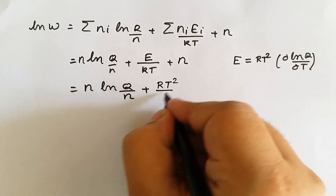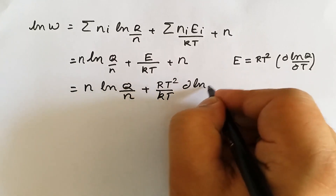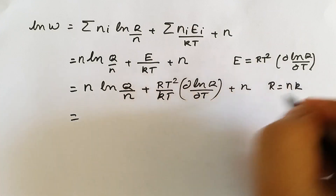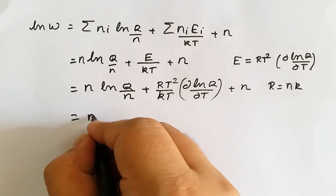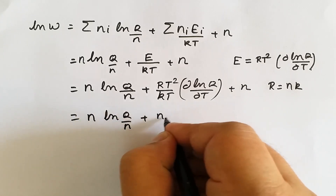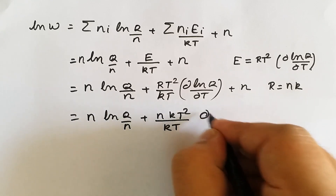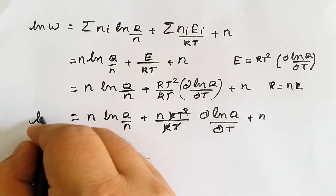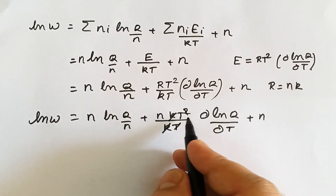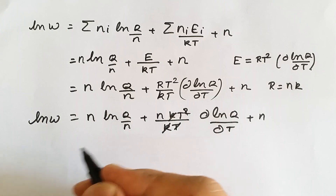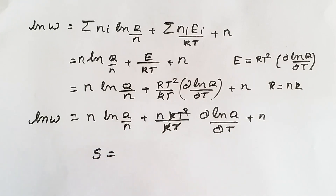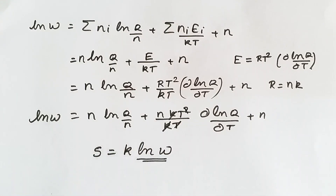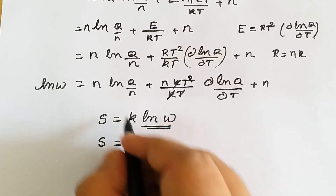Substituting E into the expression, we get N·ln(Q/N) plus RT squared upon kT times d(ln Q)/dT plus N. Since R equals N·k, and kT in the denominator with T in the numerator simplifies, we get: ln(W) equals N·ln(Q/N) plus N·T·d(ln Q)/dT plus N. Now we find entropy using Boltzmann's equation: S equals k·ln(W).